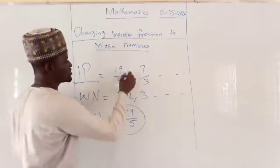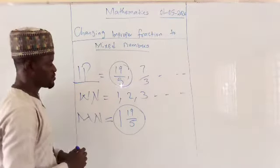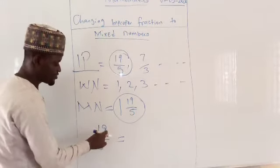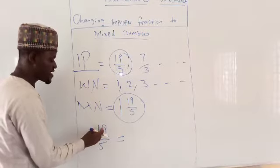And the question is, how do we change this improper fraction to a mixed number? When you have 19 over 5, that means you are going to divide 19 by 5.